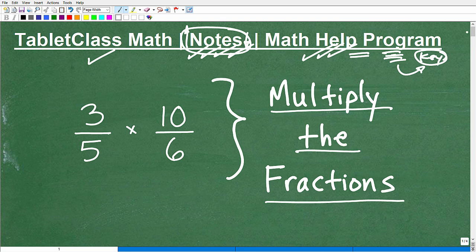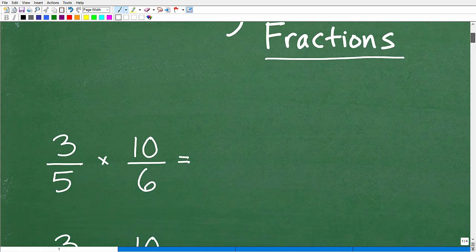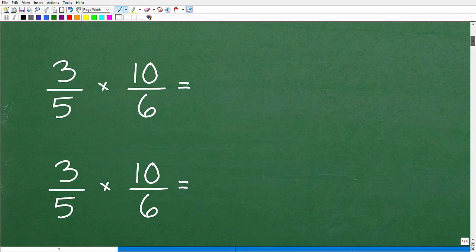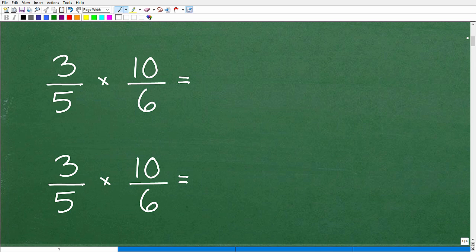So let's get into multiplying fractions. We'll use this 3/5 times 10/6 as our example problem. This is a really easy problem, but if you understand this, you can handle any problem. So first of all, what do we do to multiply fractions? We have a fraction multiplied by another fraction, and this would apply if we had like three, four, five fractions all being multiplied by one another.